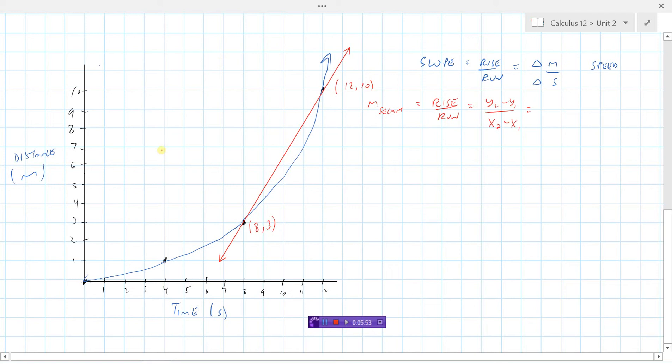The rise going from this point to this point would be 10 minus 3 or 7, and the run going from this point to this point would be 12 minus 8 which is 4. So we can see that the slope of this secant line is 7 fourths or about 1.75 meters per second.